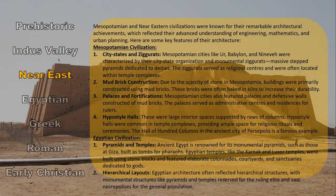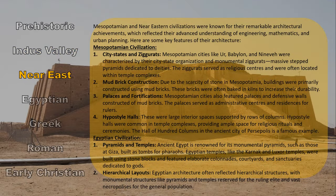The Mesopotamian or Near Eastern civilization was well known for its remarkable architectural achievements, reflecting an advanced understanding of engineering, mathematics, and urban planning. Key features included city-states, ziggurats, hypostyle halls, fortified walls, and great public buildings. Pyramids and temples were also introduced in this period.